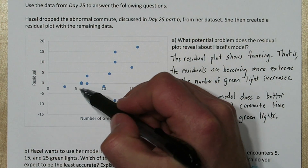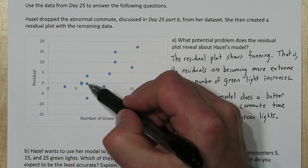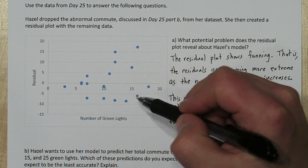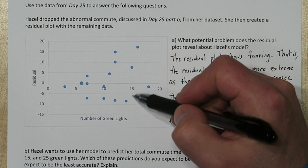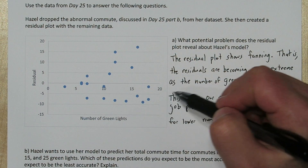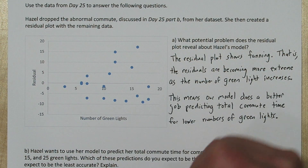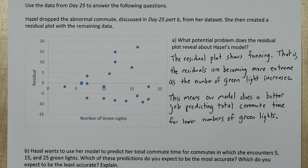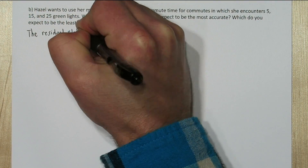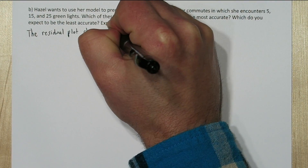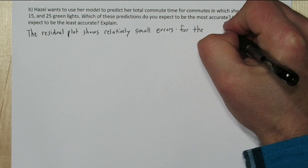Notice around 5 — the residuals near 5 are pretty small. By the time we get to 15, we have much more extreme residuals. And for 25, we don't really know what the residuals would look like — that's beyond our model's domain. So let's talk about the 5, 15, and 25 green lights.